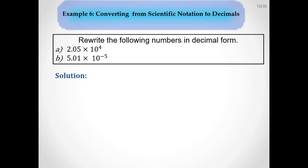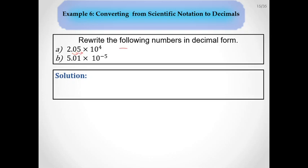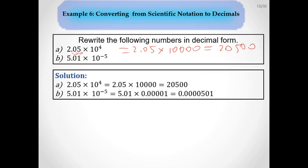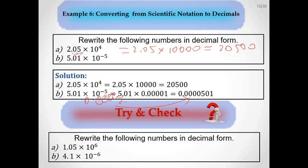Try and check: write numbers in scientific notation. The answers: for the first number, moving 6 units left gives 6.4 times 10 to the 6th. For the very small number, moving 9 units right gives 2 times 10 to the negative 9th. To convert back from scientific notation to decimal form: 2.05 times 10 to the 4th — shifting right 4 places — gives 20,500. The reverse process gives the decimal expansion.